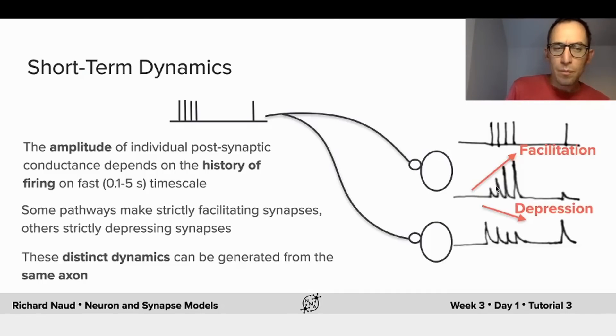There are some pathways in the brain that are making solely short-term facilitating synapses, meaning that there is an increase in the amplitude with recent firing. And other pathways are making short-term depressing synapses, meaning that the amplitude is decreasing with recent firing. These distinct dynamics can come from the same axons, but onto different postsynaptic targets.